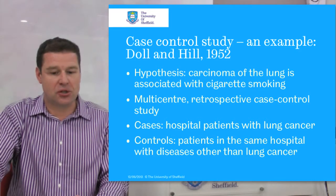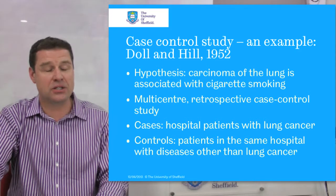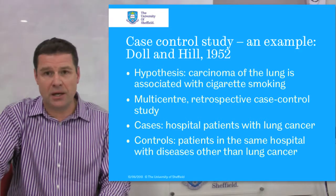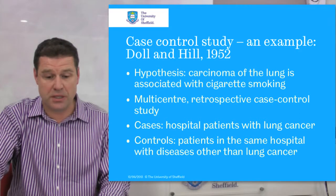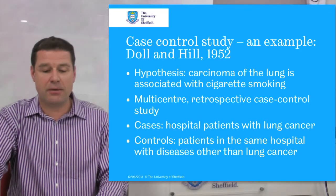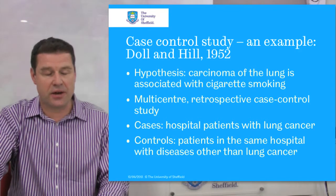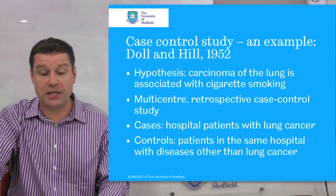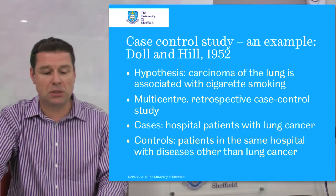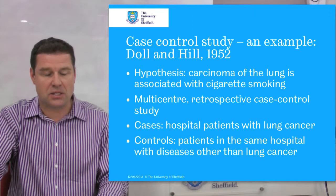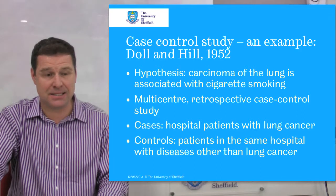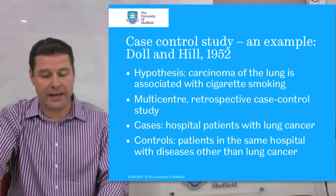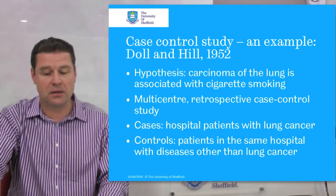By way of describing a case control study, I'm going to outline Doll and Hill's case control study looking at the link between smoking and lung cancer, undertaken in 1952. Their cohort study with doctors was in 1954, but this was their first study. The hypothesis was that carcinoma of the lung was associated with cigarette smoking, partly from Sir Richard Doll's clinical observations and partly from other studies, particularly in Germany. They set up a multi-centre, retrospective case control study, looking backwards at both cases and exposure. The cases were hospital patients with lung cancer, and the controls were patients in the same hospital with diseases other than lung cancer.